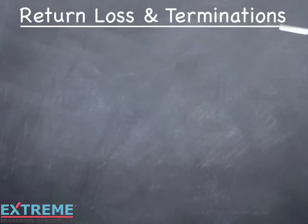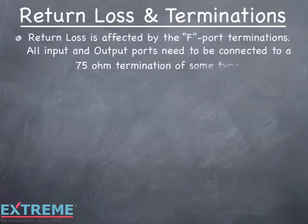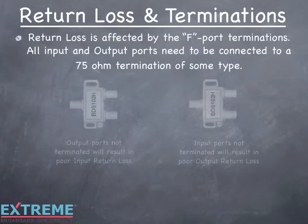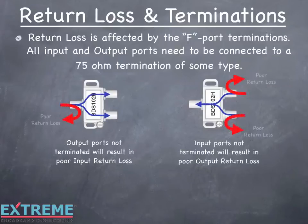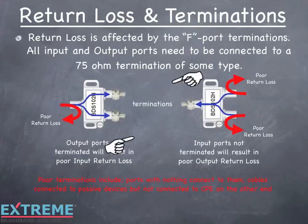Return loss is affected by the F port terminations. All input and output ports need to be connected to a 75-ohm termination of some type. Output ports not terminated will result in poor input return loss, and input ports not terminated will result in poor output return loss. In this example, we're showing the poor return loss with the ports unterminated. Some poor terminations include ports with nothing connected to them, and cables connected to passive devices but not connected to the CPE on the other end. Once the proper terminations are in place, the return loss meets the device's return loss specifications.